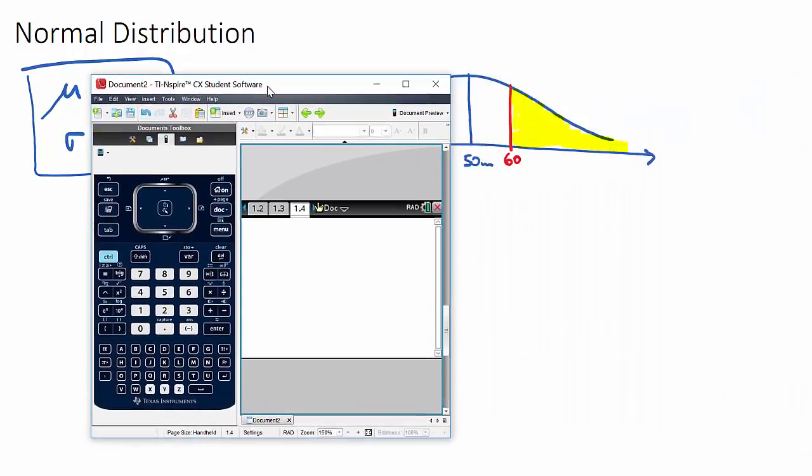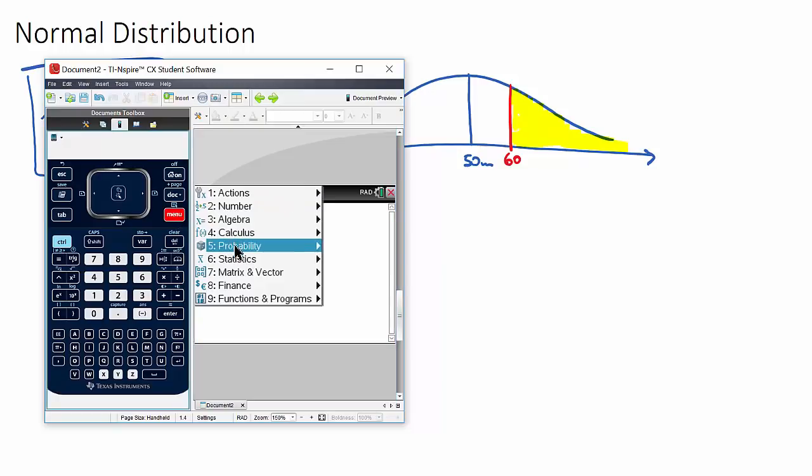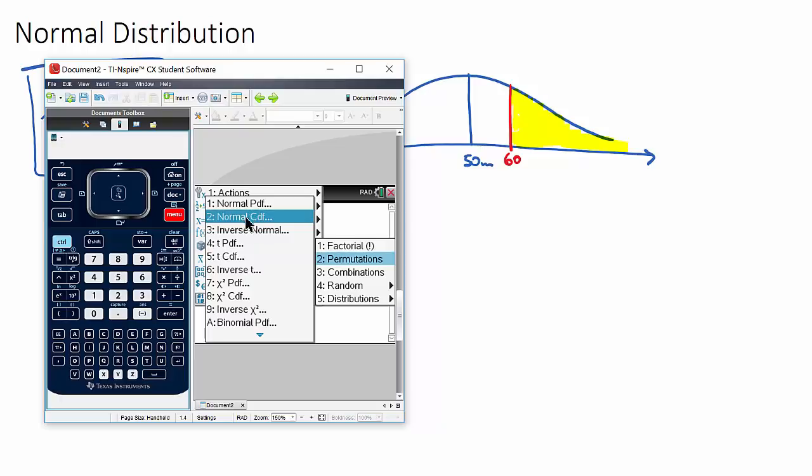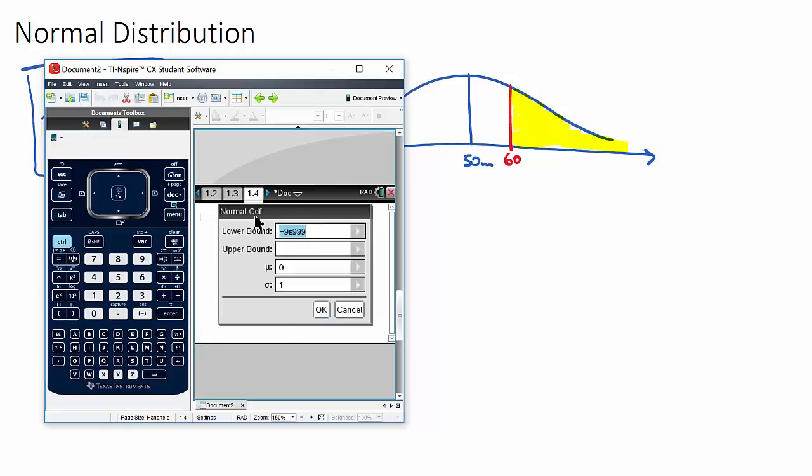And we want to work out the probability that's greater than 60, so you want to try and find your probability and distribution section, and we want to use normal CDF. We never use normal PDF in IB Math, so don't worry about this one, it's the normal CDF. And it will ask for the lower bound, the upper bound, the mean, and the standard deviation.